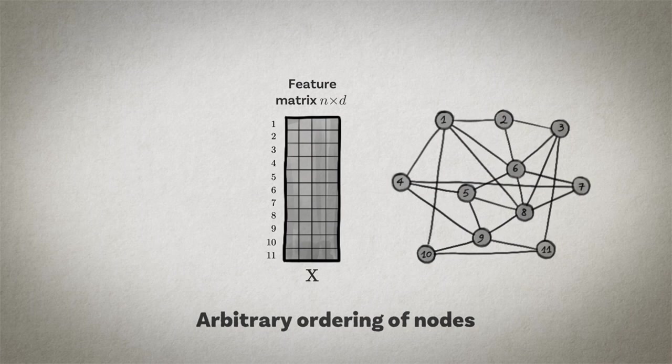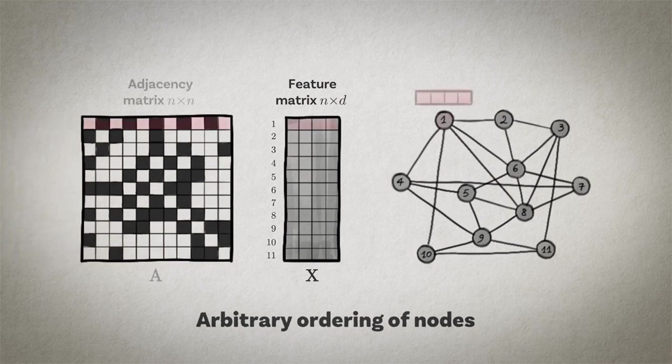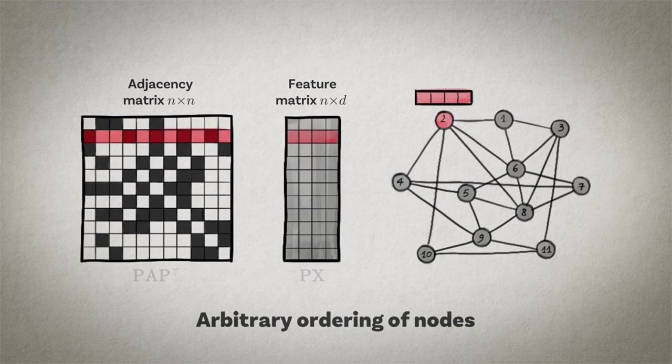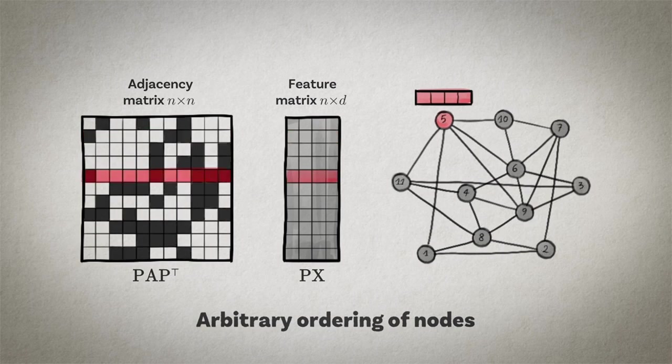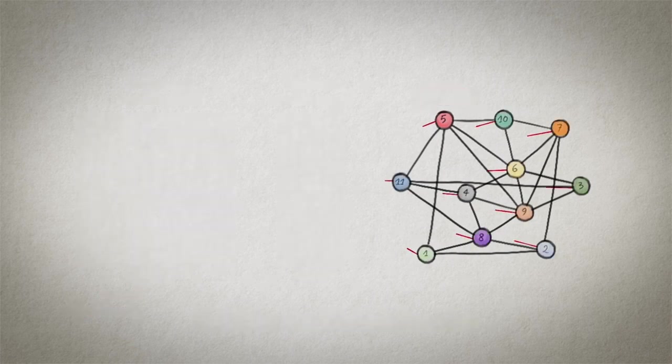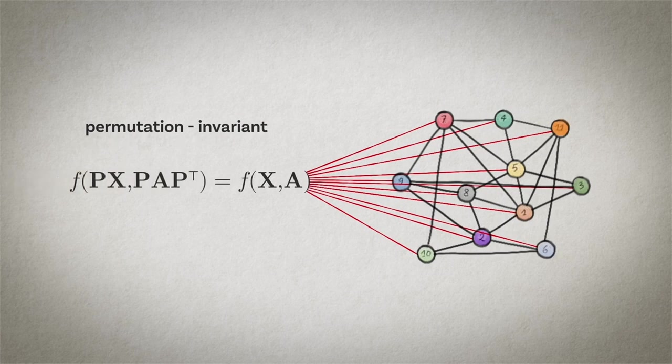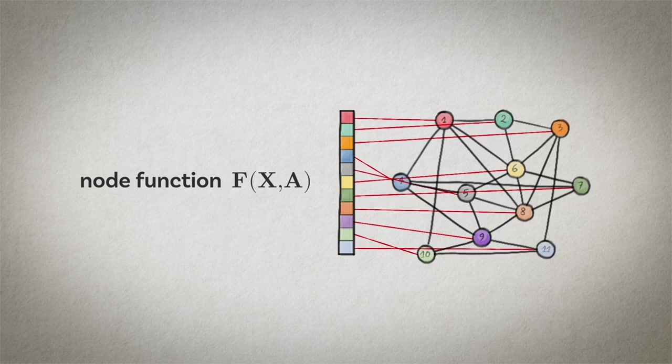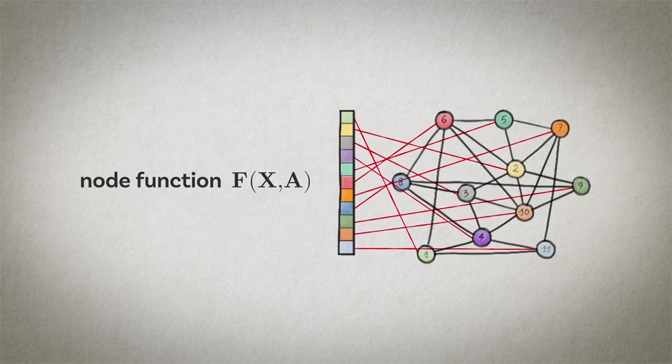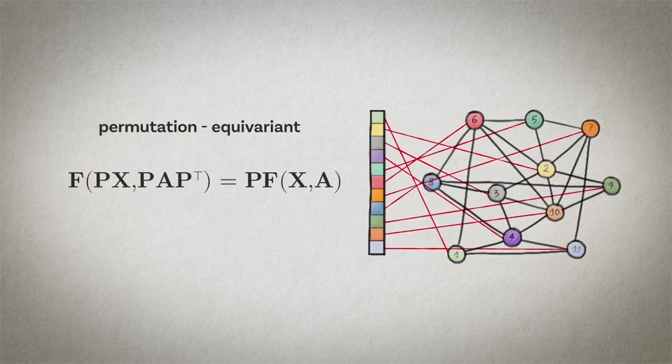The same holds for the adjacency matrix that represents the structure of the graph. If we number the nodes differently, the rows of the feature matrix and the corresponding rows and columns of the adjacency matrix will be permuted by some permutation matrix P. P is a representation of the permutation group, and we have n factorial such elements. If we want to implement a function on the graph that provides a single output for the whole graph, like predicting energy in our molecular graph example, we need to make sure that its output is unaffected by the ordering of the input nodes. We call such f permutation invariant. If on the other hand we want to make node-wise predictions, for example to detect malicious users in a social network, we want a function that changes in the same way as the input with the reordering of the nodes, or in other words, is permutation equivariant.